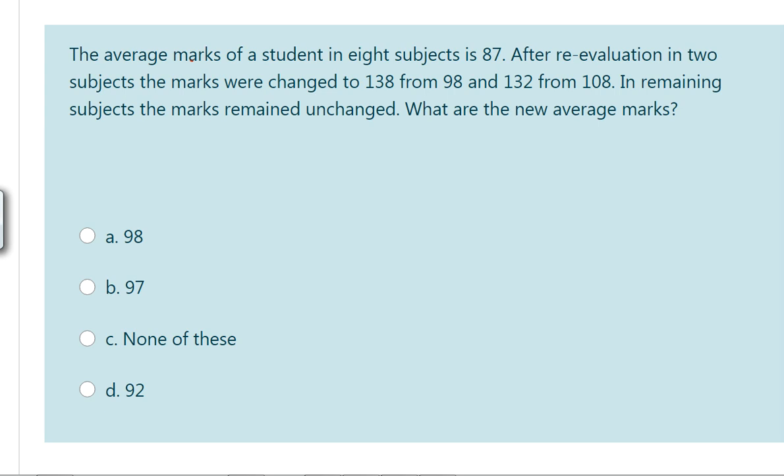Average marks of students in 8 subjects, so sum by 8 is equal to 87. So sum is equal to 87 into 8. 8 7s are 56, 8 8s are 64, giving us 696. So sum will be 696.